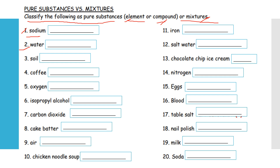Salt. Water — is water an element, compound, or mixture? Soil — element, compound, or mixture? Coffee — same with coffee. Choose your answer: is it an element, compound, or mixture? Oxygen is number five. Number six: isopropyl alcohol. Seven: carbon dioxide. Eight: cake batter. Nine: air. Ten: chicken noodle soup. Eleven: iron.